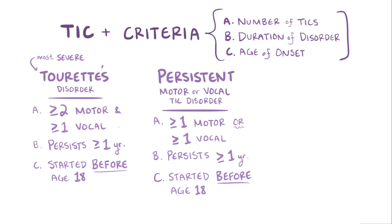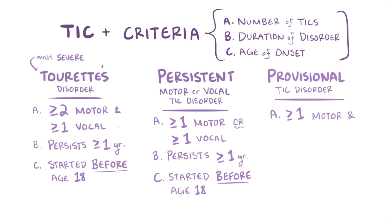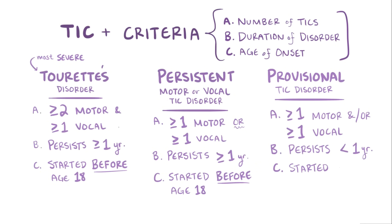Finally, for a diagnosis of provisional tic disorder, an individual can have a single or multiple motor and/or verbal tics, but they must be present for less than one year since their onset, and they appear before the age of 18.